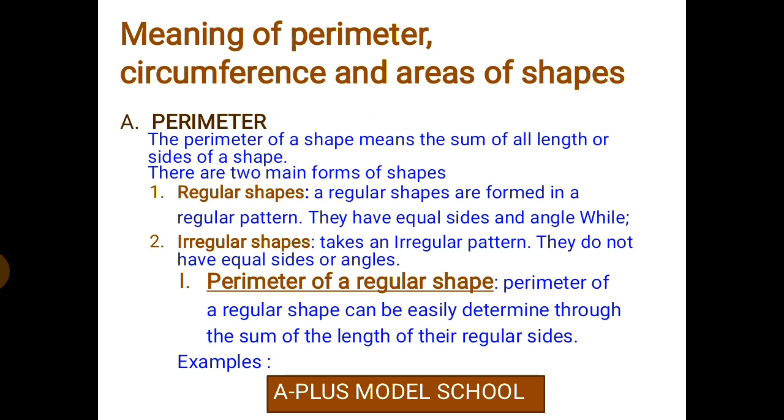On our next slide we have the meaning of perimeter, circumference and areas of shapes. What is perimeter? The perimeter of a shape means the sum of all lengths or sides of a shape. The perimeter of a shape is the total sum of all lengths or sides of the shape.